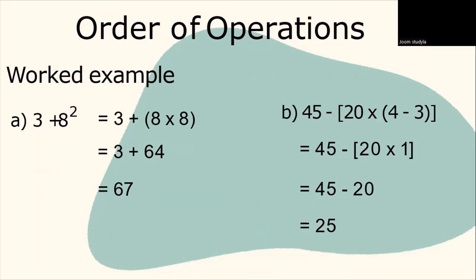So, then we have 8 multiplied by 8 is equal to 64. When you want to solve the problem, you have to start from left to the right. So, 3 plus 64 is equivalent to 67.